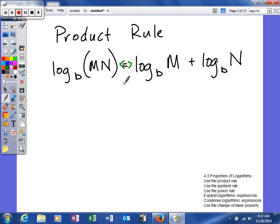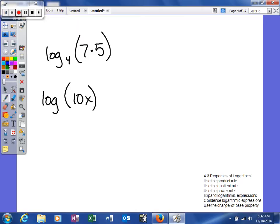We'll look at a couple examples and see if we can learn how to use the product rule. In the first one we have log base 4 of 7 times 5. Since we are taking the log of two things being multiplied together, we can break it up.